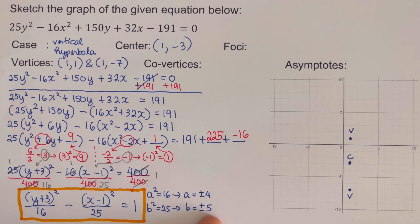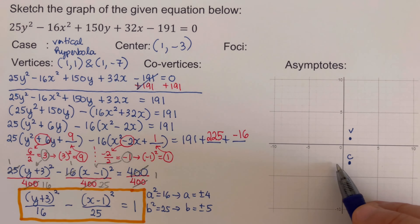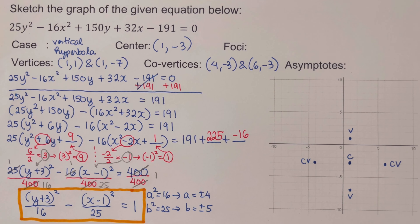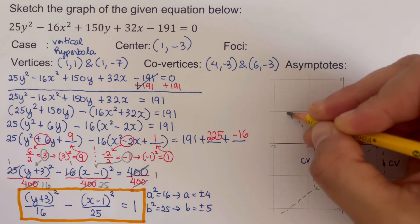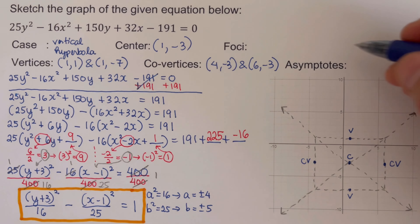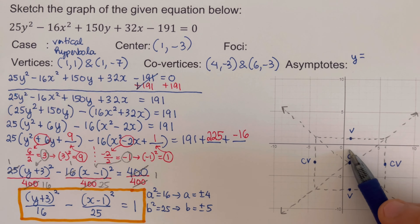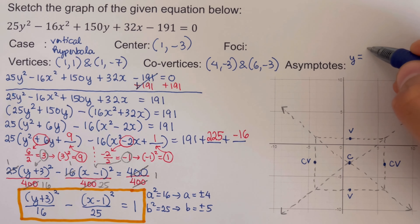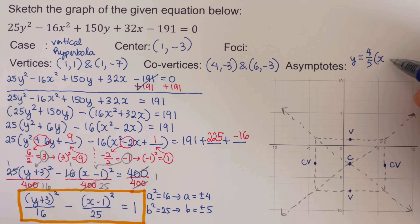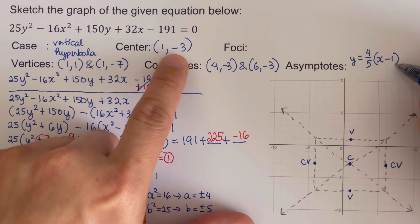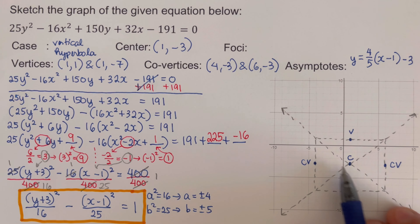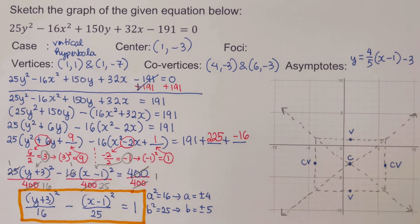The co-vertices are 5 spaces to the left and right of the center, giving coordinates (negative 4, negative 3) and (6, negative 3). We draw the rectangle through the vertices and co-vertices, then draw the two asymptotes through the corners passing through the center. The asymptote equations use slope a over b, which is 4 over 5. The equations are y equals 4 over 5 times (x minus 1) minus 3 and y equals negative 4 over 5 times (x minus 1) minus 3. We sketch the hyperbola.